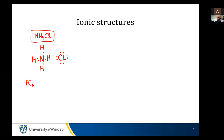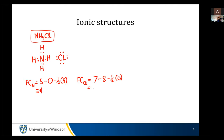So the formal charge on nitrogen equals five valence electrons minus zero unpaired electrons minus one-half of eight. Doing really advanced university math, the answer is plus one. Similarly, the formal charge on chlorine: chlorine has seven valence electrons, minus eight unpaired electrons, minus one-half of zero since it's got nothing in a bond. That brings us to minus one. So overall, the formal charge on the molecule is zero — we've got ammonium chloride, and the plus one and the minus one cancel each other out.